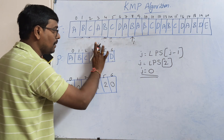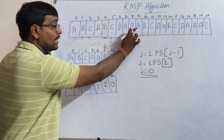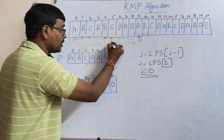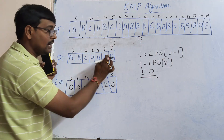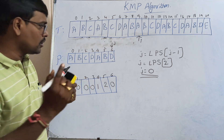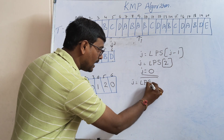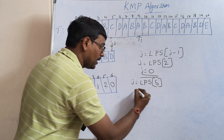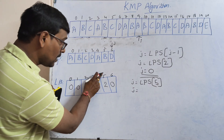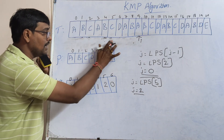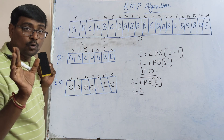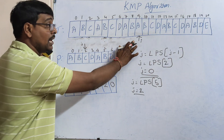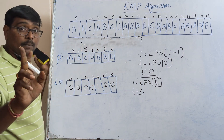Whenever there is a match, blindly increment both pointers. 'b' and 'b' match again. Now i points to the next position and j points to its position. Here 'a' (text) and 'd' (pattern) mismatch again. Apply the same process: j = lps[j-1]. The current j value is 6, so j = lps[5] = 2. j is moved to position 2. Remember: once j is updated, i is not updated.